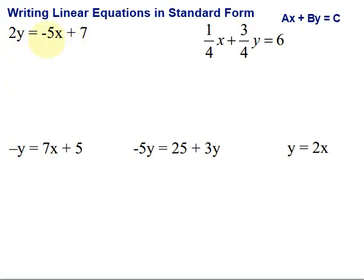Alright, so, first one right here. This is linear because we don't have any powers or square roots or absolute values or anything like that. Powers other than one, of course. And to write it in standard form, we want to make this X term be positive.